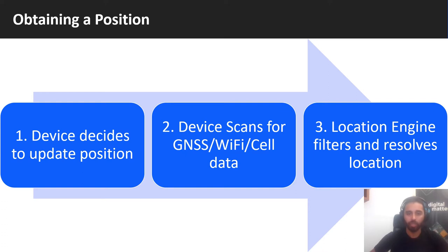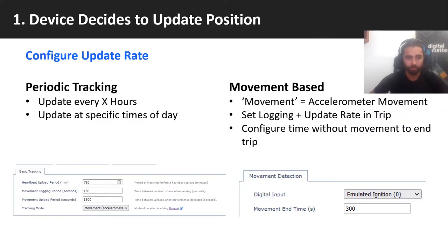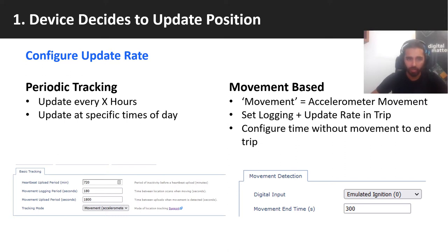Basically, when the device needs to get a fix — it's decided for some reason it needs to update its position — that might be we're just doing two heartbeats a day, or we've configured it to update if we start moving or during movement. The device would trigger a scan based on how we've set it up: either a regular heartbeat or due to movement. On the left, we can see where we'd set up our update rate and if we want to track periodically or based on movement. On the right, if we're using movement-based tracking, this will control how long we need to sit still before the trip ends, because you don't want to start and stop trips if you just stop for five seconds momentarily.